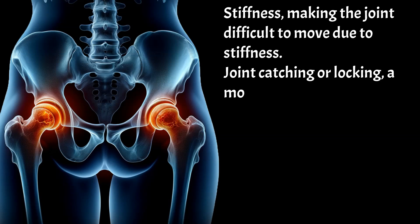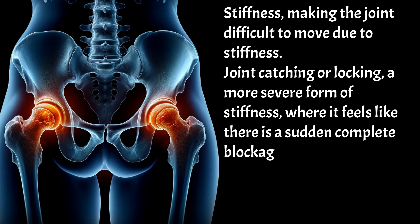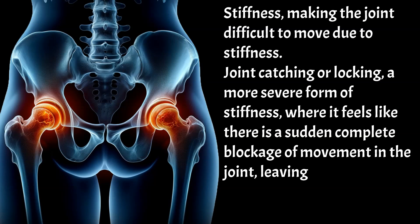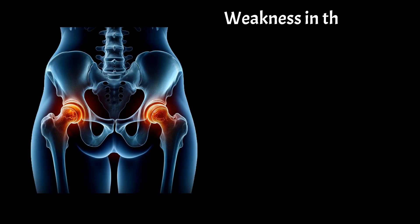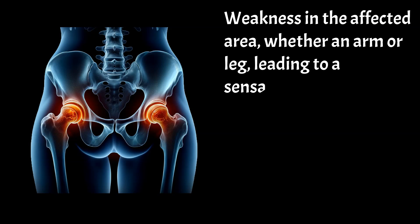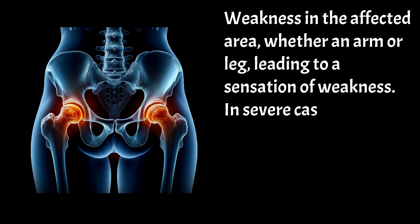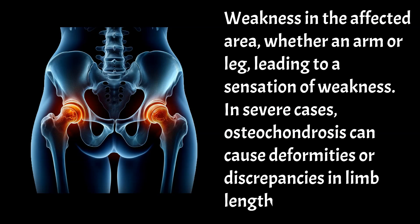Joint catching or locking is a more severe form of stiffness, where it feels like there is a sudden complete blockage of movement in the joint, leaving the person stuck in a specific position and unable to move further. Weakness in the affected area, whether an arm or leg, leads to a sensation of weakness. In severe cases, osteochondrosis can cause deformities or discrepancies in limb length.